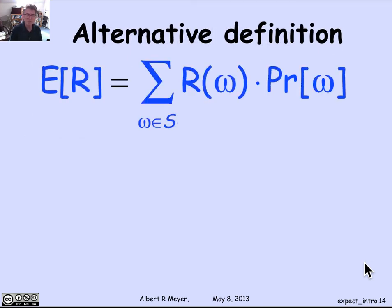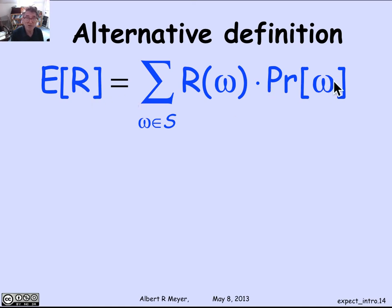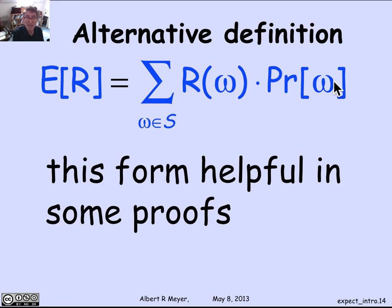There's a technical result useful in some proofs: there's another way to express the expectation. The expectation can also be written as the sum over all outcomes in the sample space S of the value of the random variable at that outcome times the probability of that outcome. This alternative definition — summing over outcomes rather than over values — is not obviously equivalent to the standard definition, and it's technically helpful in proofs, though used less often in applications.